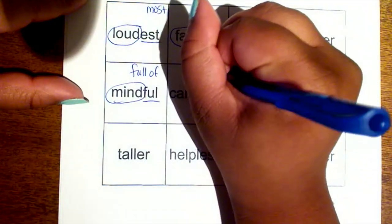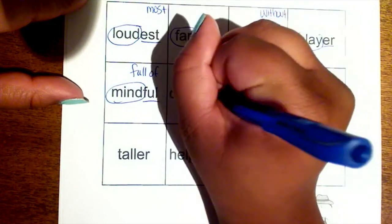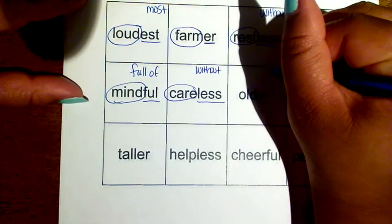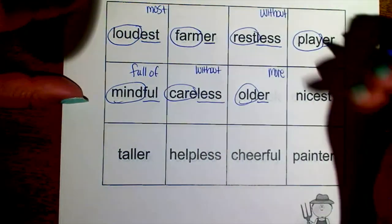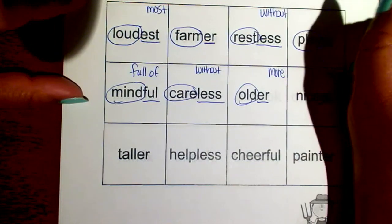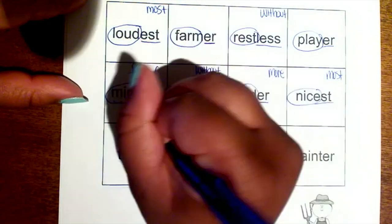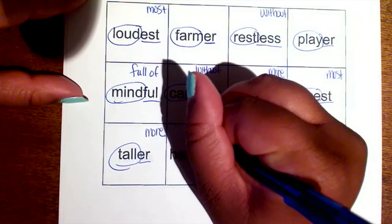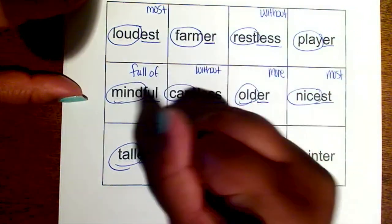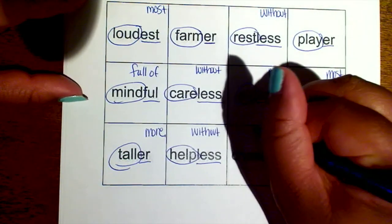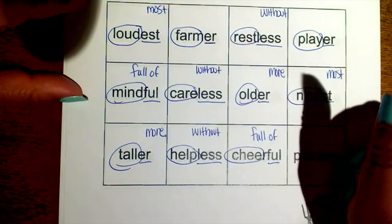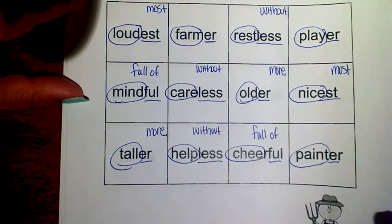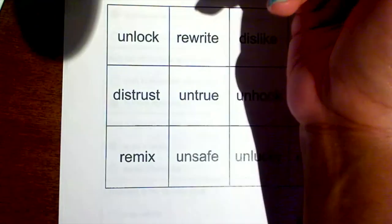'-less' means 'without.' We have 'older' — in this word the suffix '-er' means 'more,' so when you're older you are more old. '-est' means 'most,' '-er' means 'more,' '-less' means 'without,' '-ful' means 'full of.' Then we have 'painter.' Let's go ahead and look at the prefixes.